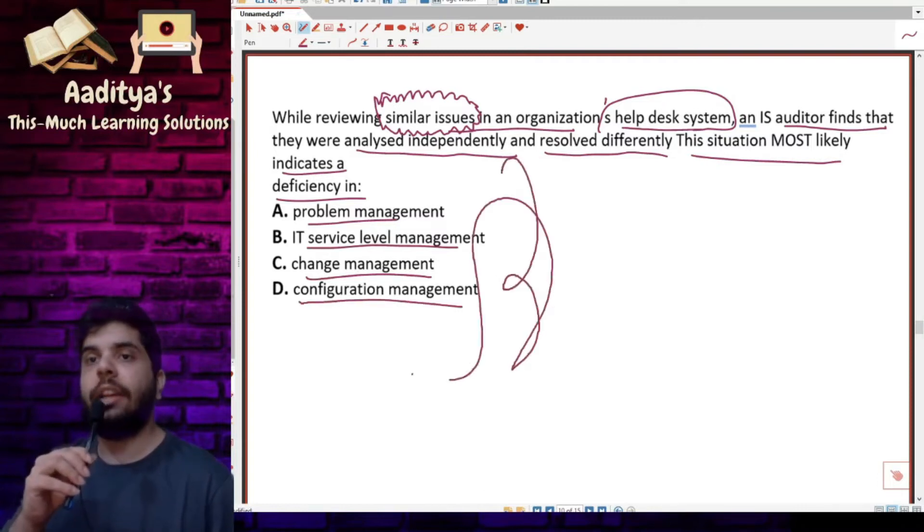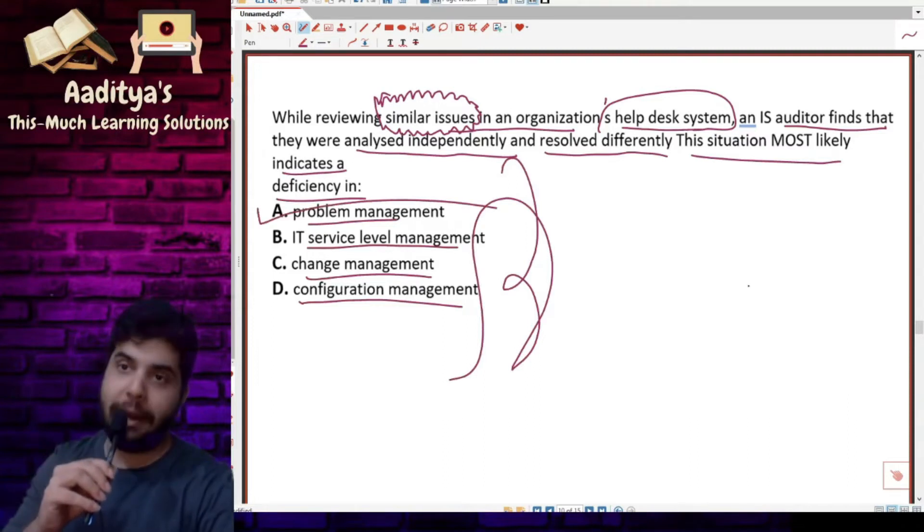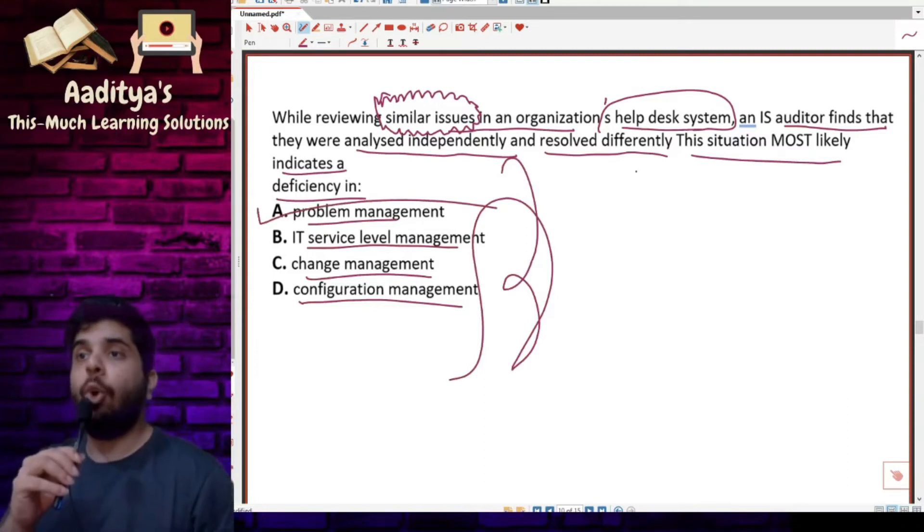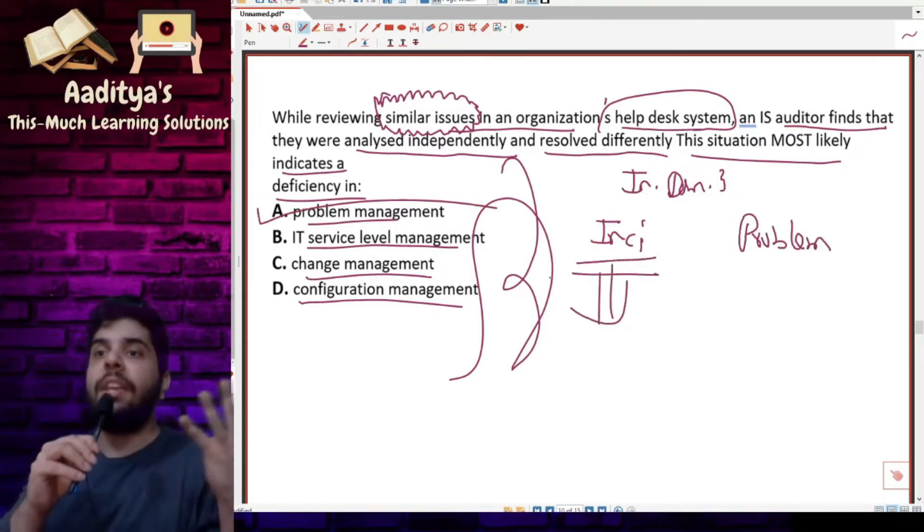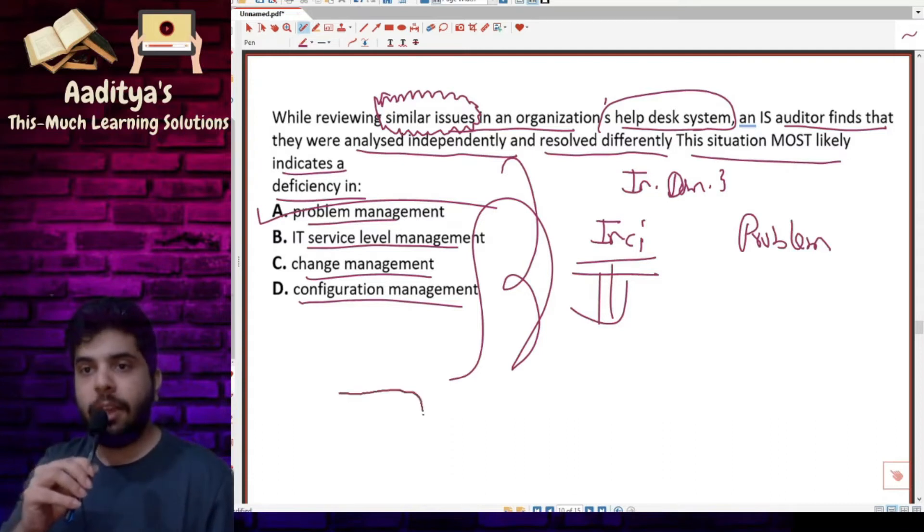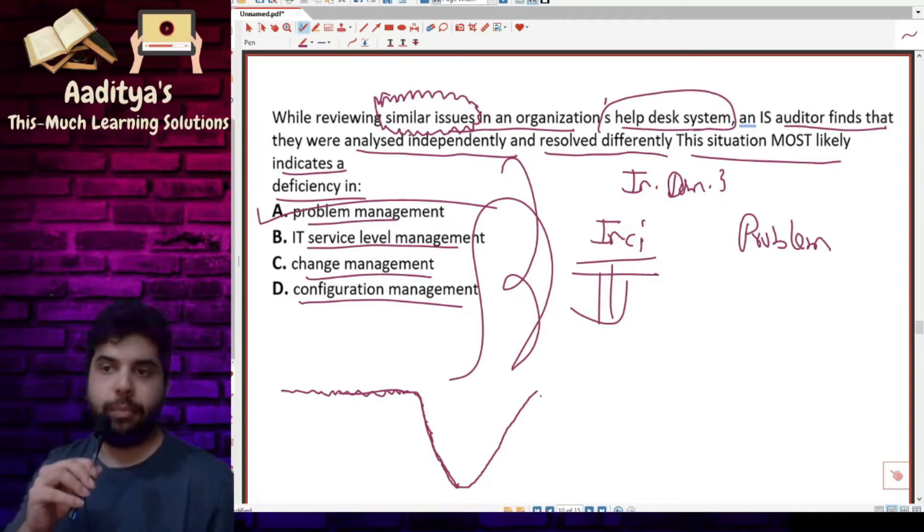The correct answer is option A, problem management. In domain 4, we discussed incident management and problem management. If the impact of the incident is very high, when operations are running smoothly and suddenly you find any sort of incident, you want to recover from that incident. When you talk about recovery from that incident, incident management comes in.